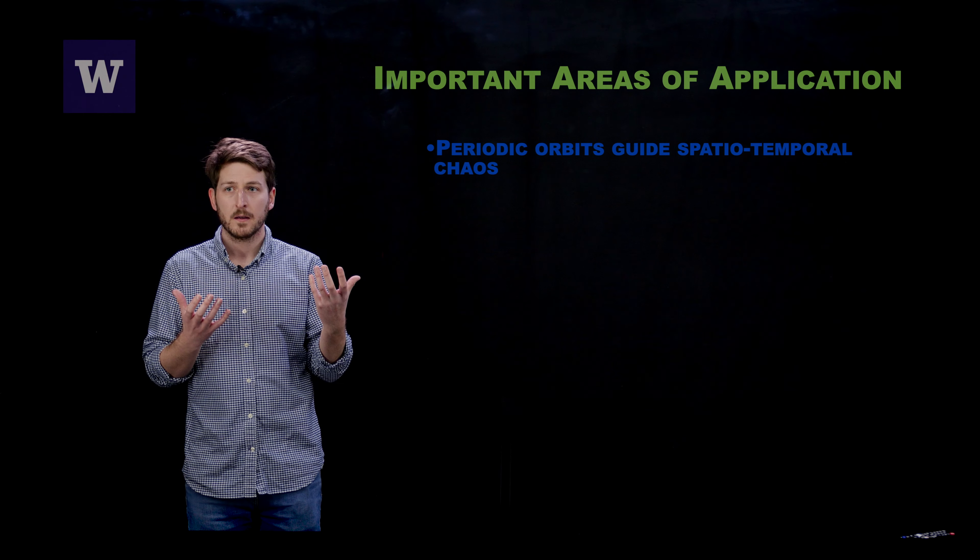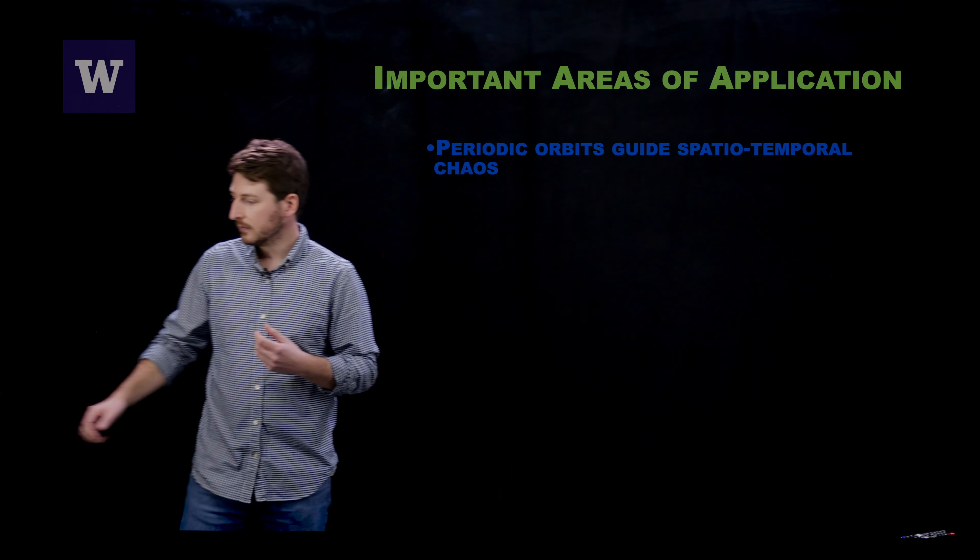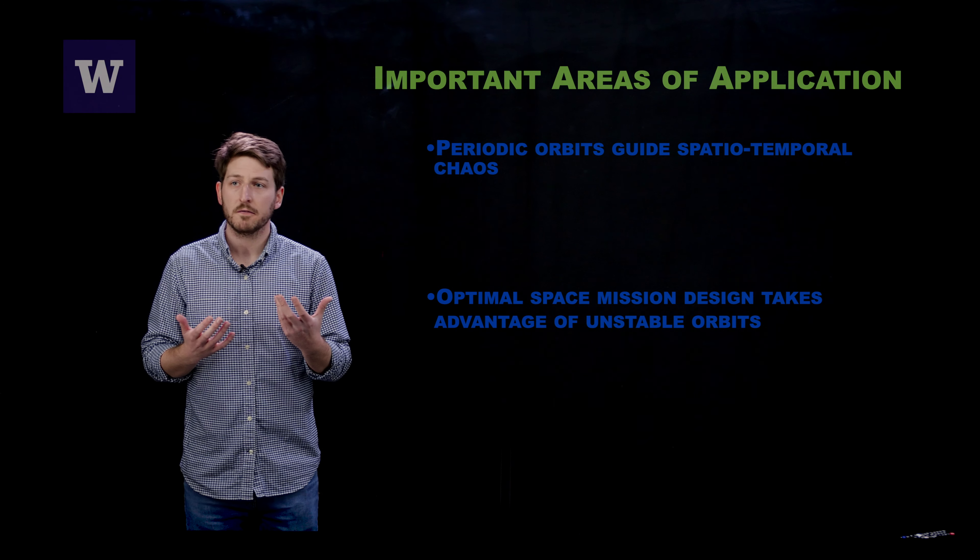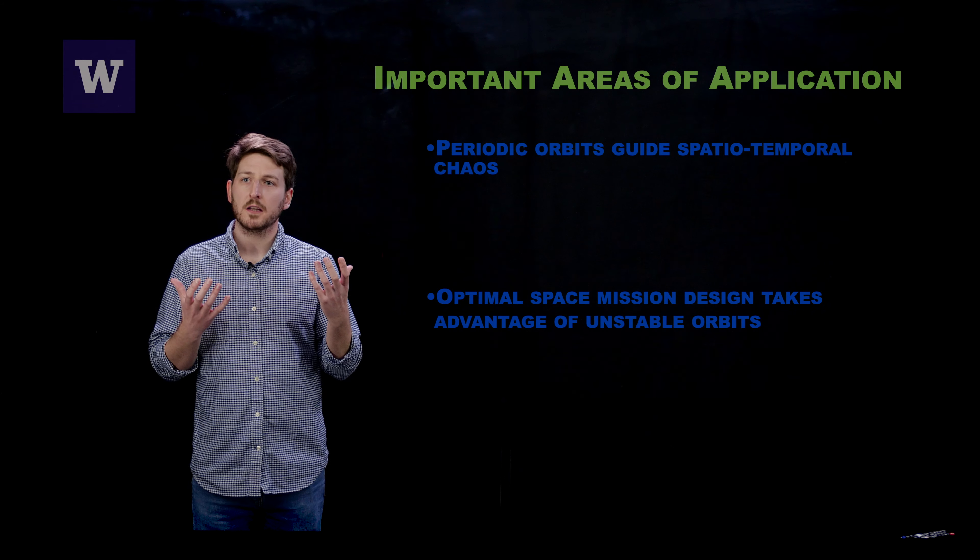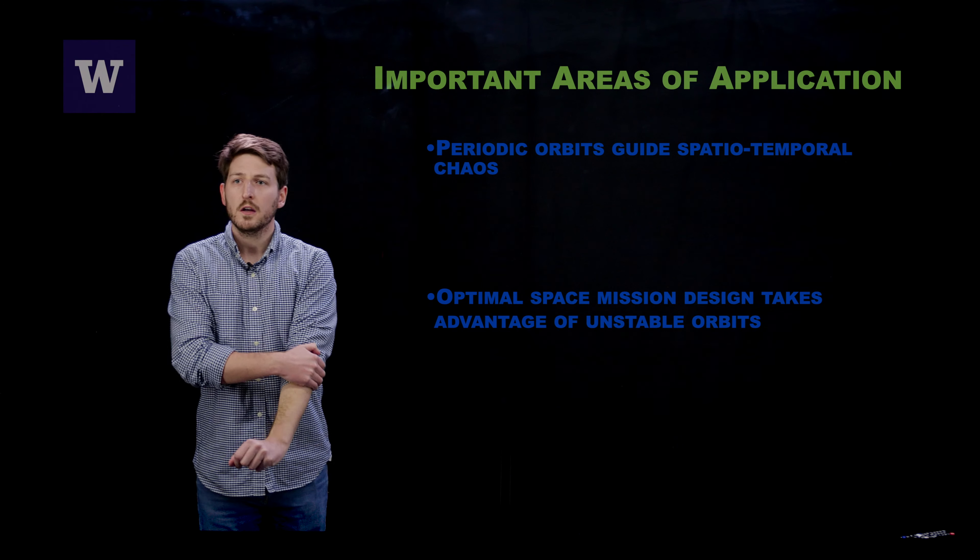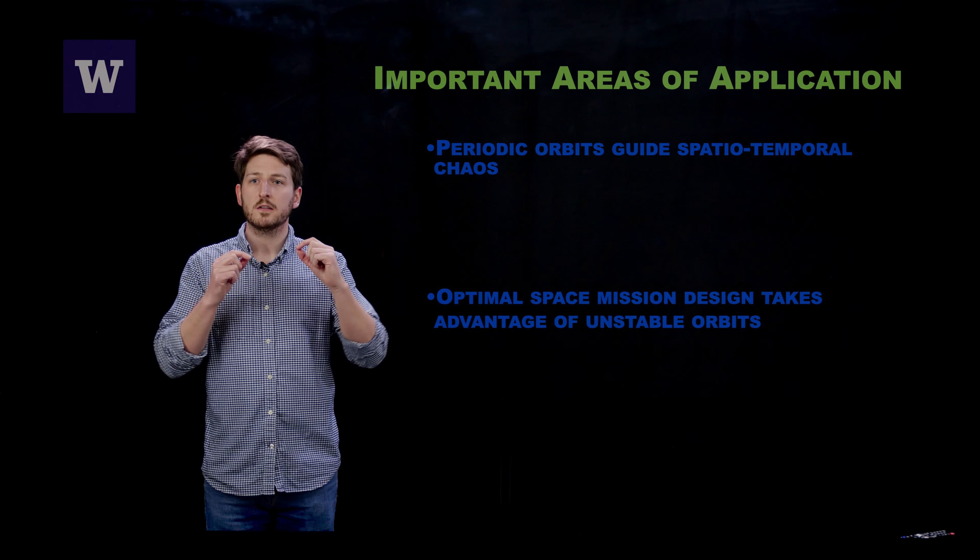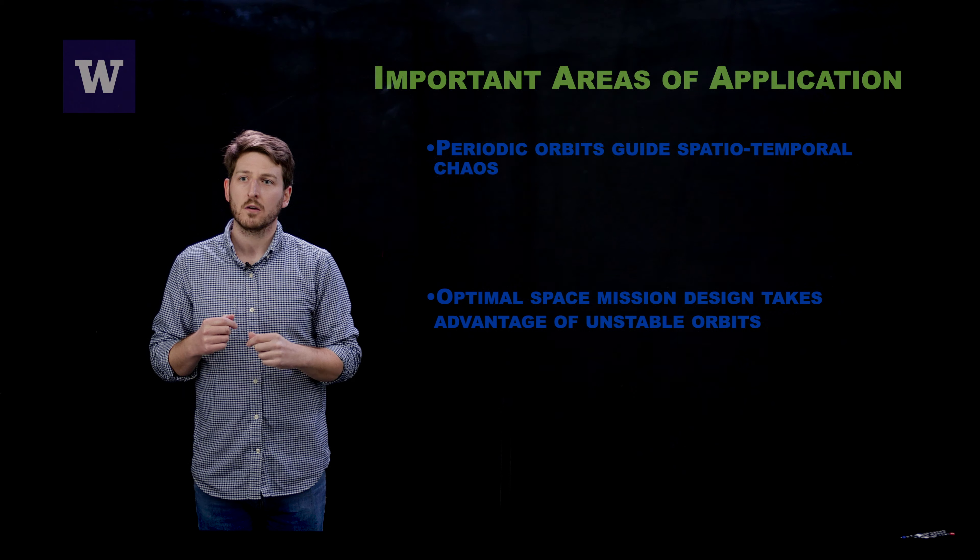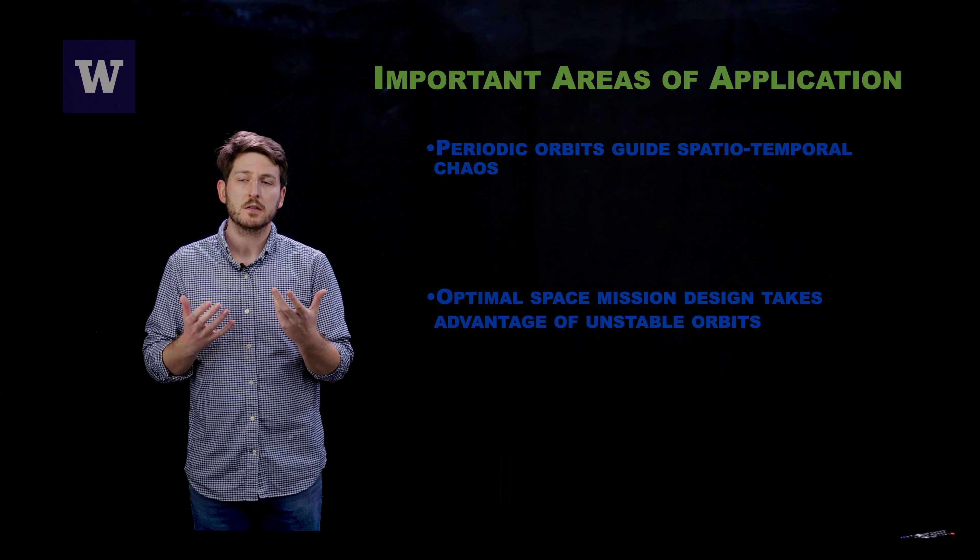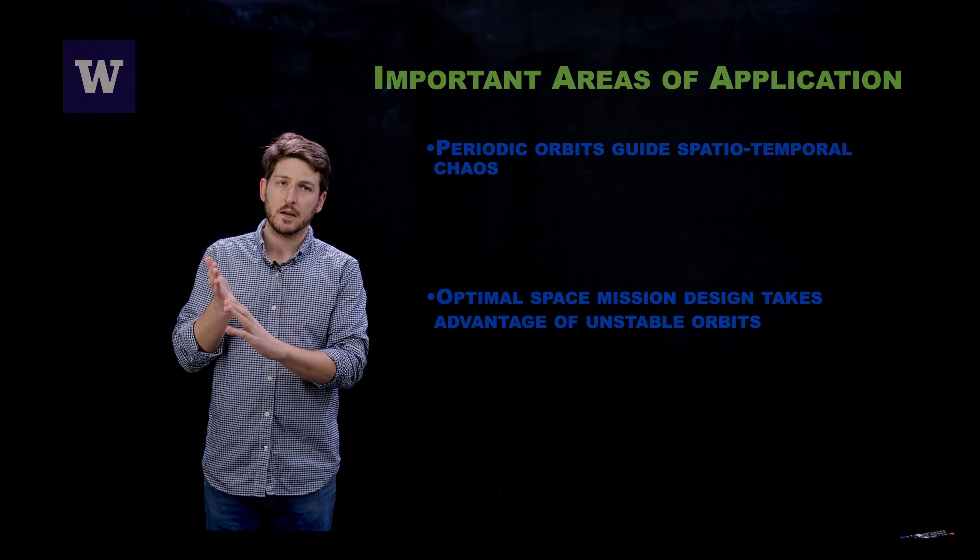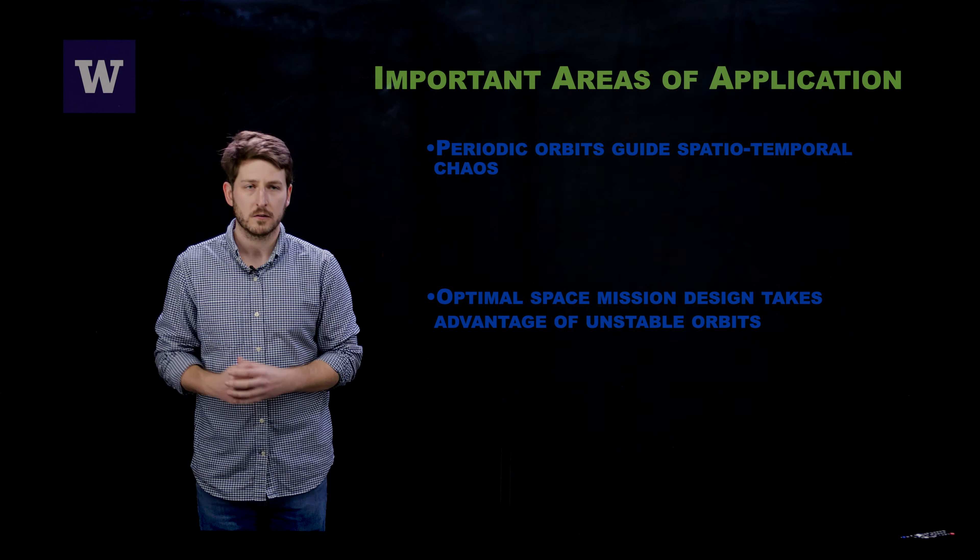Another place where we would like to be able to use these methods efficiently is in optimal space mission design. That is, in many-body simulations of our solar system, a number of studies have shown that unstable trajectories and unstable orbits can be used to design space missions that travel vast distances across the universe or the solar system with very little energy applied. And what we propose is to use these methods to first find those unstable orbits and second find the optimal control so that we can follow those orbits. Thank you.